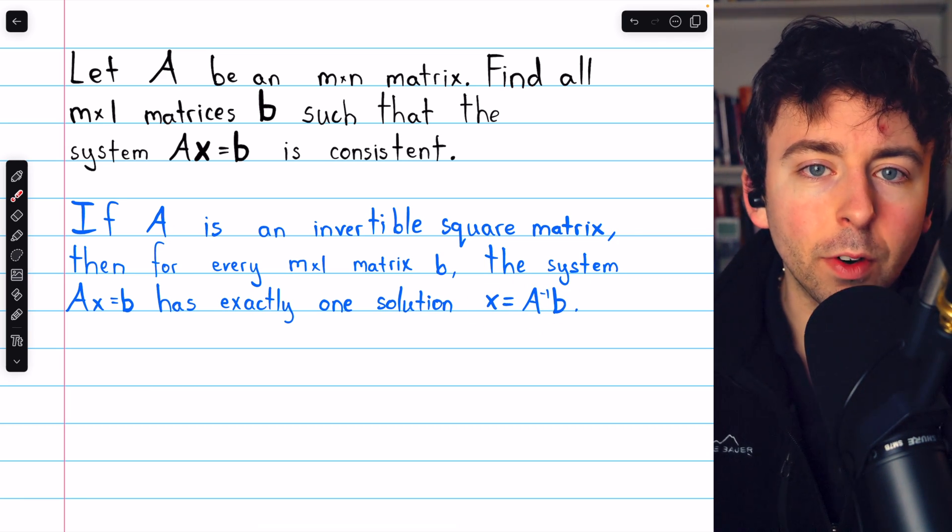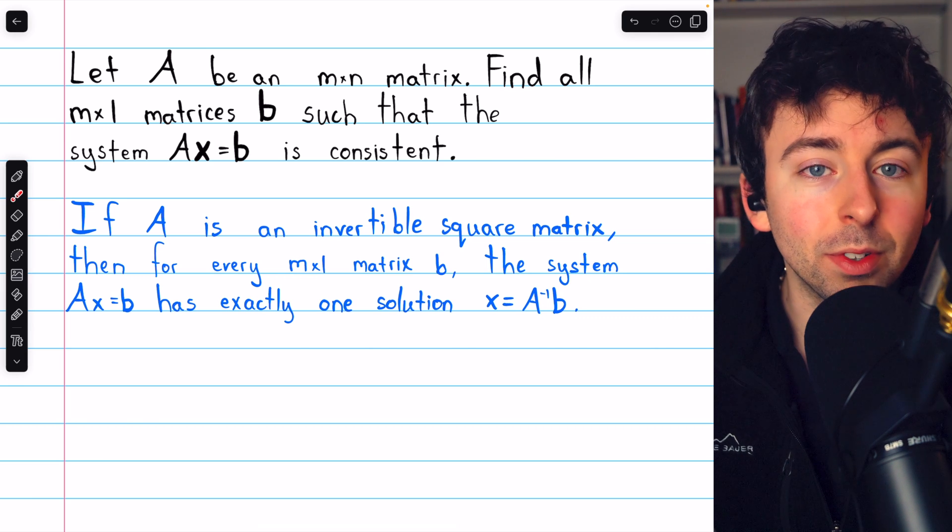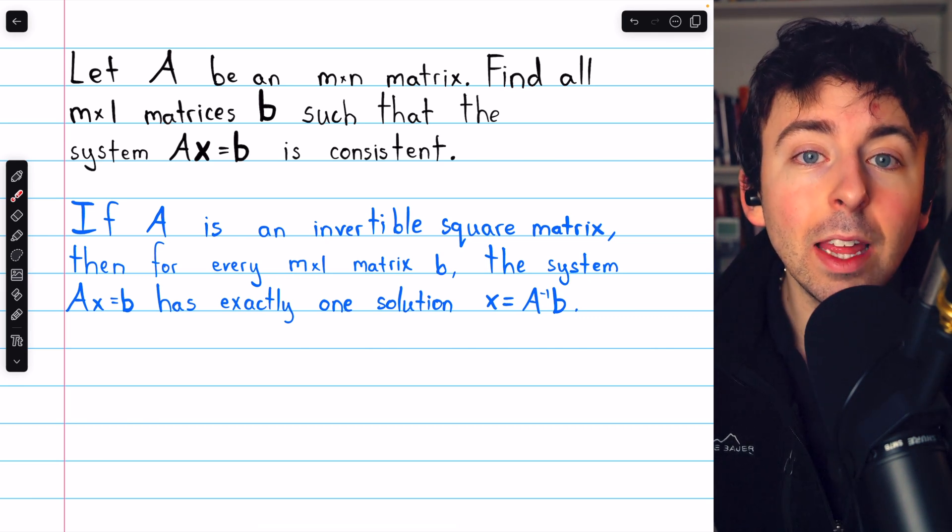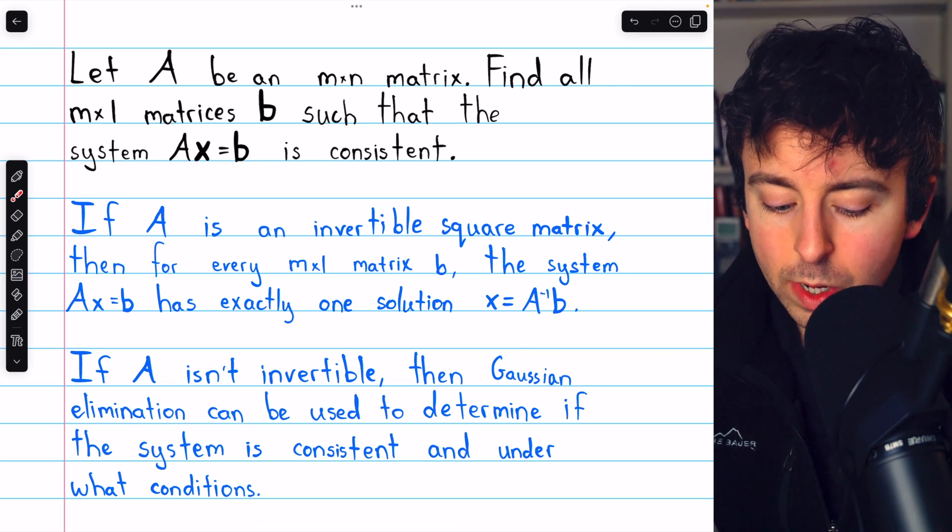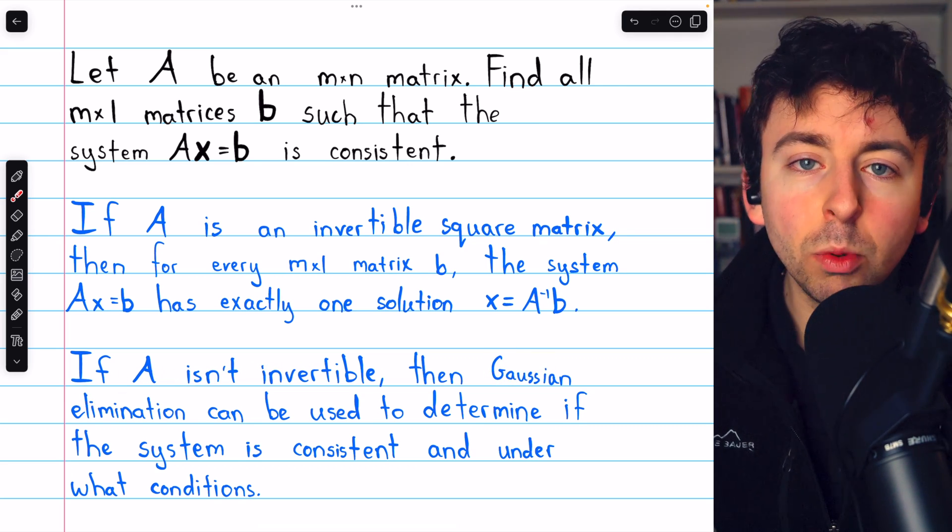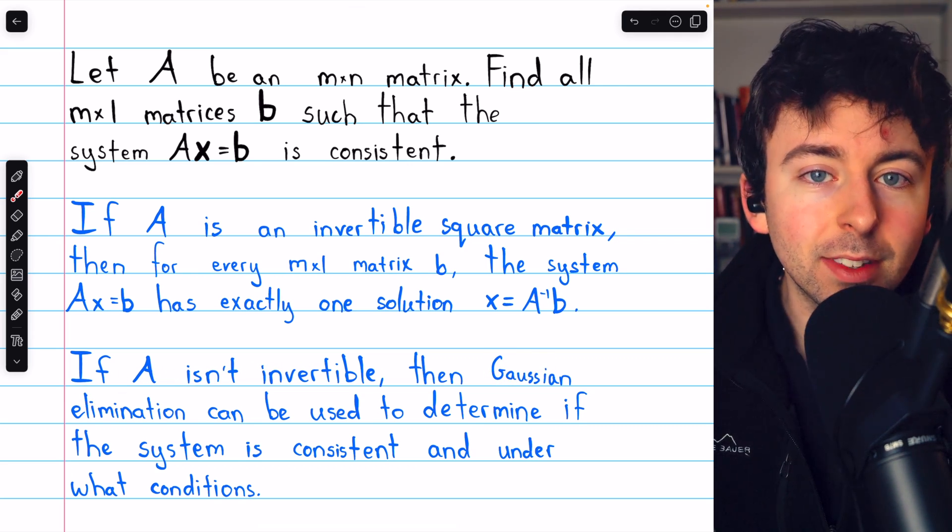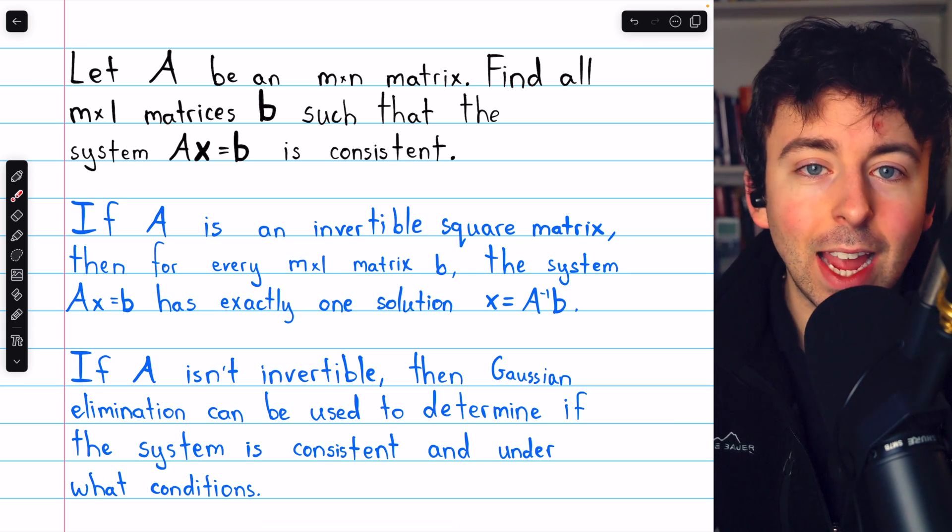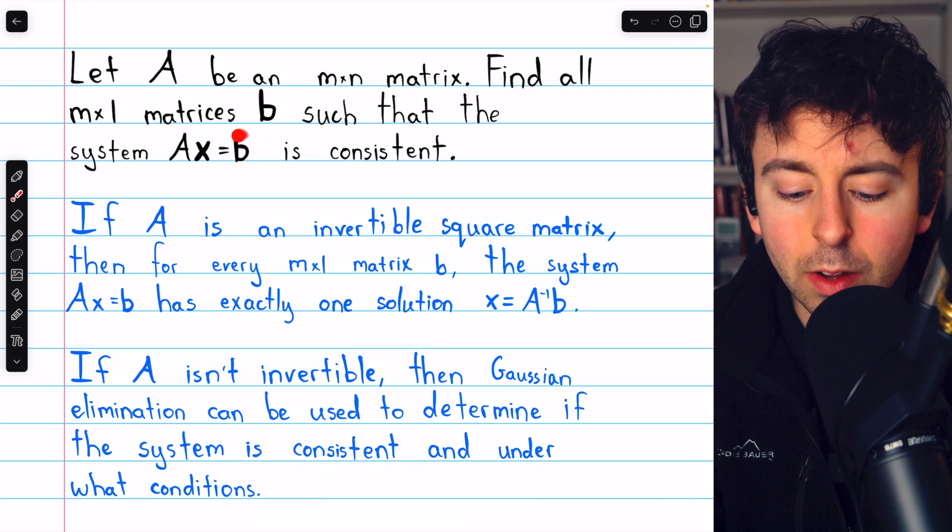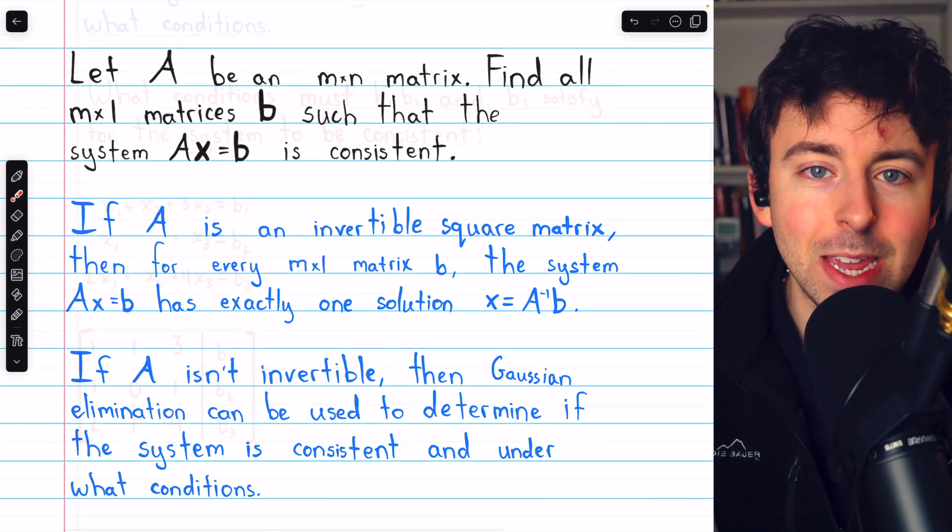But what if A is not invertible? In that case, we'll see in this video how to use elimination to solve the problem. So if A isn't invertible, we can use Gaussian elimination. We'll be able to determine if the system is consistent and under what conditions, because it may be the case that it is consistent only for certain sorts of matrices b.